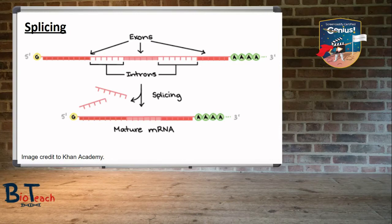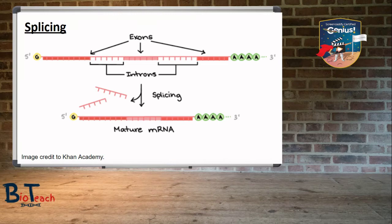DNA is made of sections called exons, which are protein-coding sections, and introns, which are non-coding sections. During transcription, the code from both exons and introns is found in the pre-mRNA. The non-functioning introns are later removed from the pre-mRNA sequence, and the remaining exons are joined together by splicing to form mature mRNA strands. The exon sections can be joined in a variety of combinations and orders, so the same sequence of DNA can code for several different proteins.